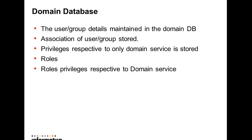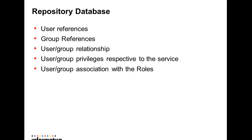Privileges and roles respective to the Domain service are stored in the domain database. In the repository database, we keep the user and group preferences, user-group relationships, and privileges respective to the Repository service. Permissions for each user and group are also stored in the repository database. So the privileges, roles, and permissions respective to the PowerCenter Repository service are maintained in the PowerCenter repository database, and all remaining details are stored in the domain database.